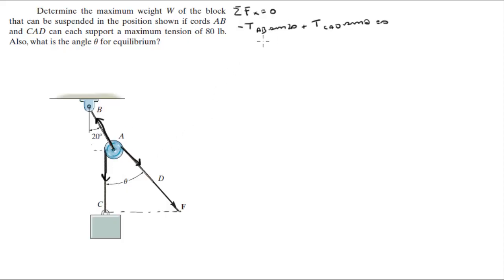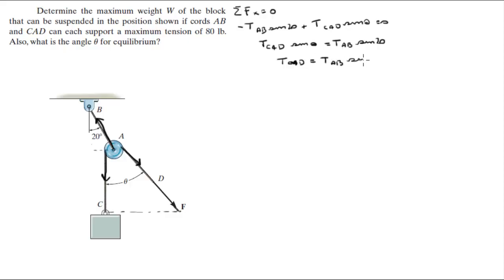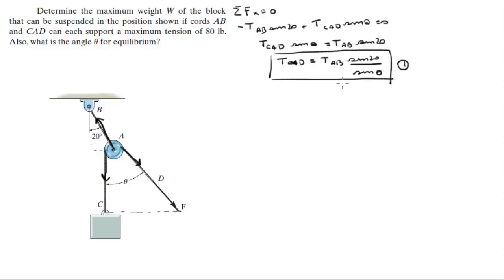So we know that tension CAD times sine of theta equals tension AB times sine of 20. Therefore, tension CAD equals tension AB times sine of 20 over sine of theta. Let's call this equation 1.